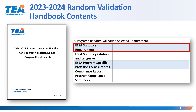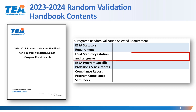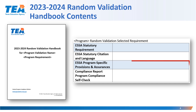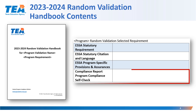The first item described is a general description of the statutory requirement. The second item includes the statutory citation and language from the Every Student Succeeds Act statute. The third piece of information includes how the particular item is referenced in the ESSA Program Specific Provisions and Assurances. The last piece of information includes how the item is listed in the Compliance Report Program Compliance Self-Check.